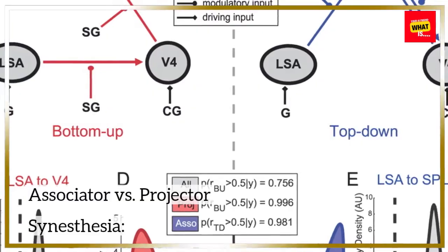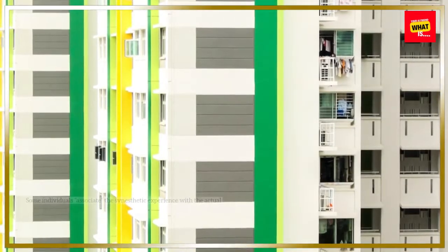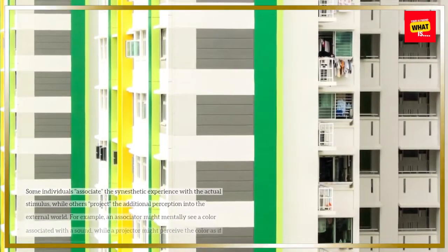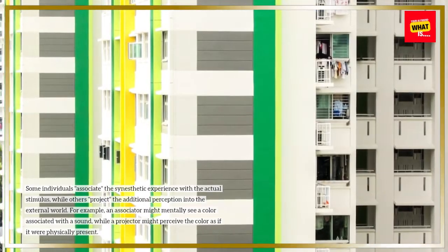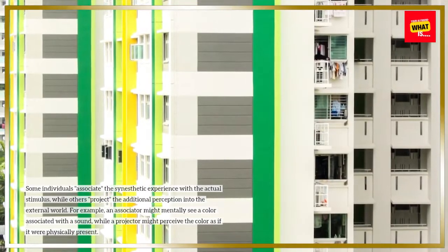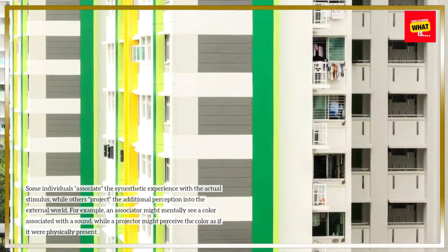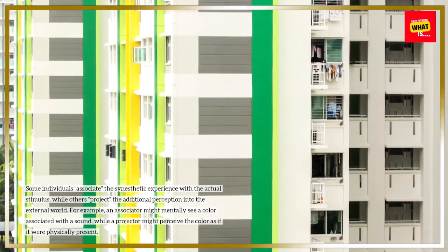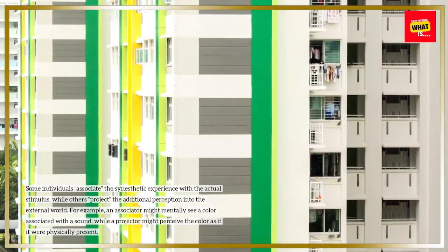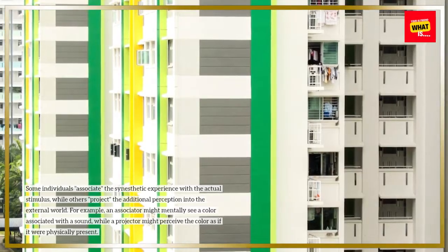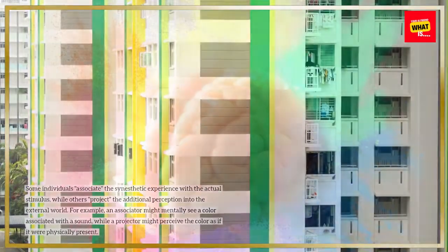There is also a distinction between associator versus projector synesthesia. Some individuals associate the synesthetic experience with the actual stimulus, while others project the additional perception into the external world. For example, an associator might mentally see a color associated with a sound, while a projector might perceive the color as if it were physically present.